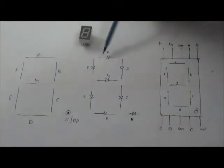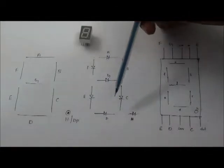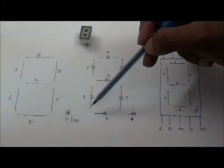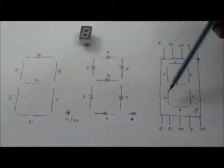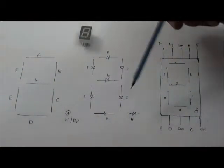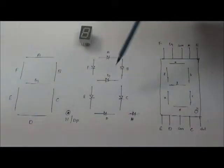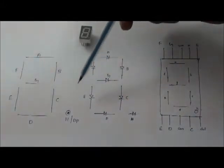If it is common anode, the positive terminals of these LEDs are made common to plus 5V and these negative terminals of the LEDs are driven to the outputs, where we supply 0V. When we supply 0V the respective LEDs glow, and the respective characters are displayed through 7-segment display.